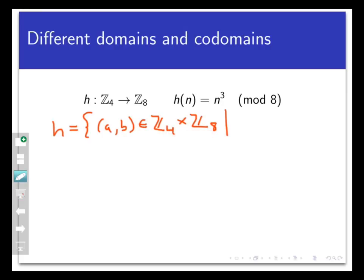And as to what pairs are actually in that set, well, technically it would be the set of all ordered pairs x, y in Z4 cross Z8 such that y, the second coordinate, is equal to x cubed mod 8, where x is the first coordinate. But since the domain is finite, we can actually list all of these.